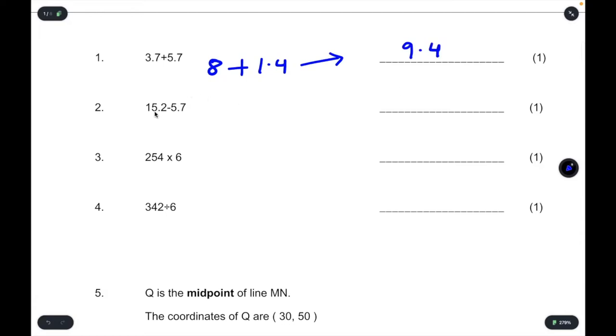Question two, we've got 15.2 take away 5.7. So we can think of it as take away the 0.7 from 15.2. If we had to take away just 0.2, we end up at 15. And then we need to take away a further 5.5. It's the same really as saying 15 take away 5.5. So 15 take away 5 would have been 10. But 15 take away 5.5 is going to be 0.5 less than that. So it's going to be 9.5.